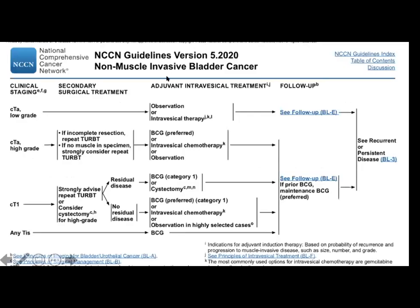To summarize the NCCN algorithm: for low-grade TA after initial TURBT, you may observe and also give intravesical therapy such as gemcitabine or mitomycin C. For high-grade TA, you do TURBT — if incomplete, repeat TURBT — then you may give BCG or intravesical chemotherapy. For T1 high-grade, advise repeat TURBT if resection is incomplete, and you may give BCG. The role of cystectomy will also be discussed, especially for carcinoma in situ.